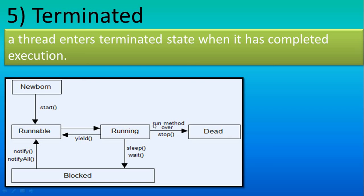A thread enters the terminated state when it has completed execution. Thread termination is the last stage, known as the dead stage, and for that we use the stop method. Once you use stop, thread execution stops permanently and it will not go back to any other stage. The new born and terminated stages happen only once each. The runnable, running, and block stages can happen more than once — they cycle. But the new born and dead stages happen only once, at the start and end respectively. The next tutorial will show how to create an actual thread program.